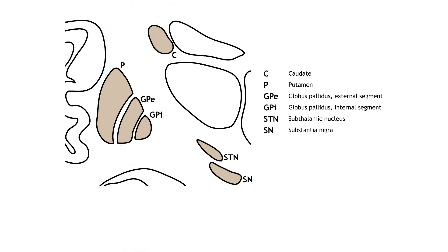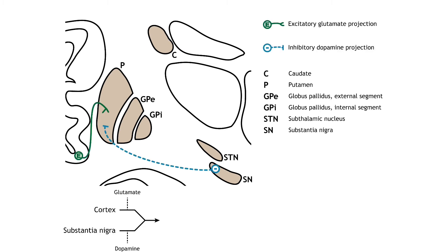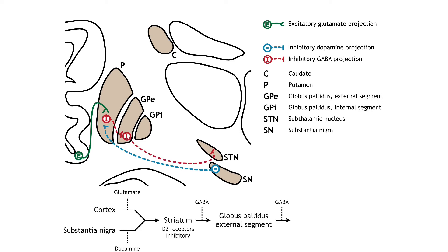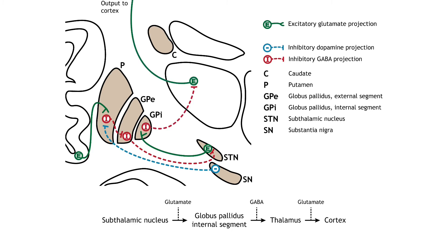The indirect pathway is a little more complex. Like the direct pathway, input into the basal ganglia arises from the cortex and substantia nigra, but there are more internal connections within the basal ganglia than what occurs in the direct pathway. Inhibitory neurons in the striatum involved in the indirect pathway project to the external segment of the globus pallidus. GABAergic neurons in the external segment of the globus pallidus project to the subthalamic nucleus, which then sends excitatory output to the internal segment of the globus pallidus, which outputs to the thalamus. The thalamus continues to send excitatory projections to the cortex.